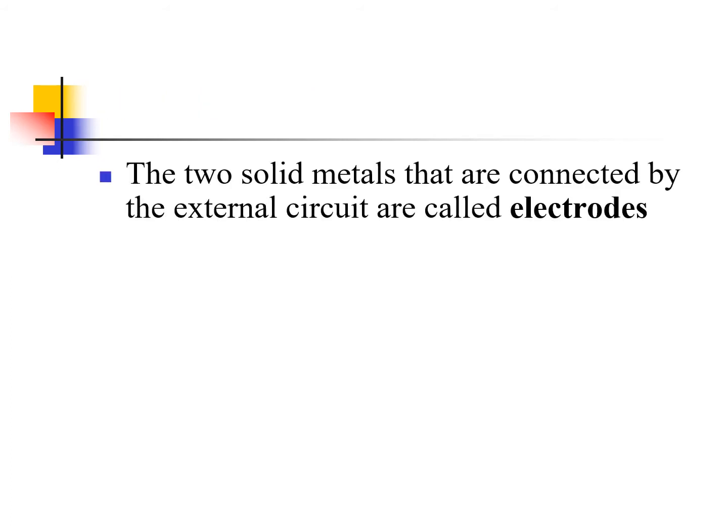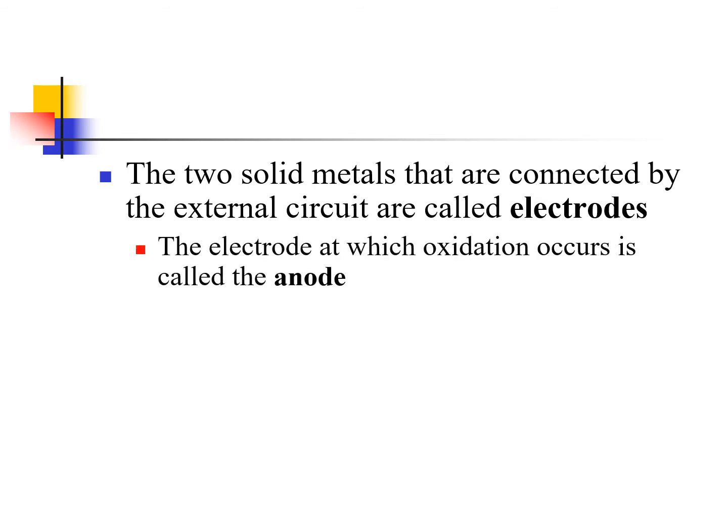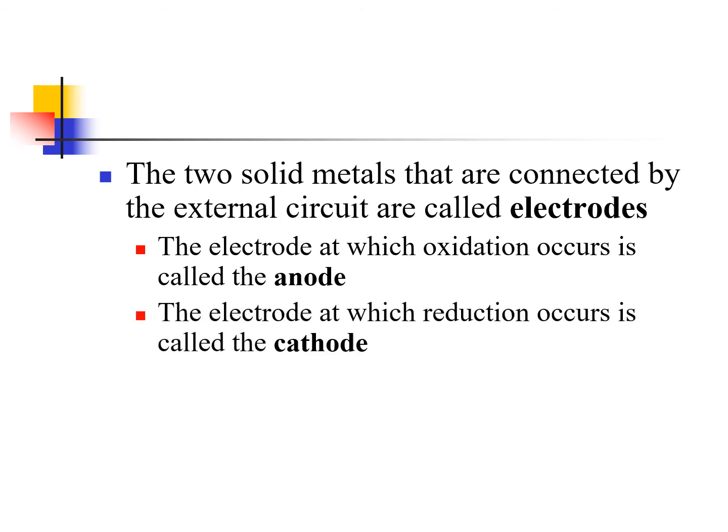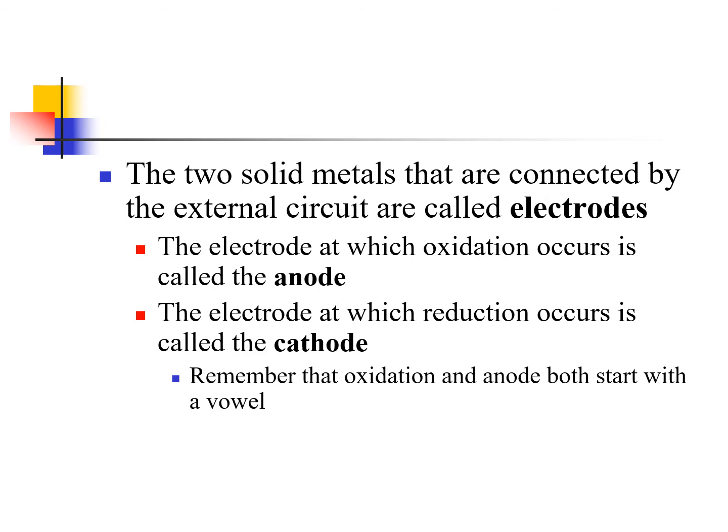The two solid metals connecting the external circuit — in this case copper metal and zinc metal — we call electrodes. The electrode at which oxidation occurs is called the anode; the electrode at which reduction occurs is called the cathode. You will need to remember those. Oxidation takes place at the anode; reduction takes place at the cathode. One way to remember: oxidation and anode both start with a vowel; reduction and cathode both start with a consonant.